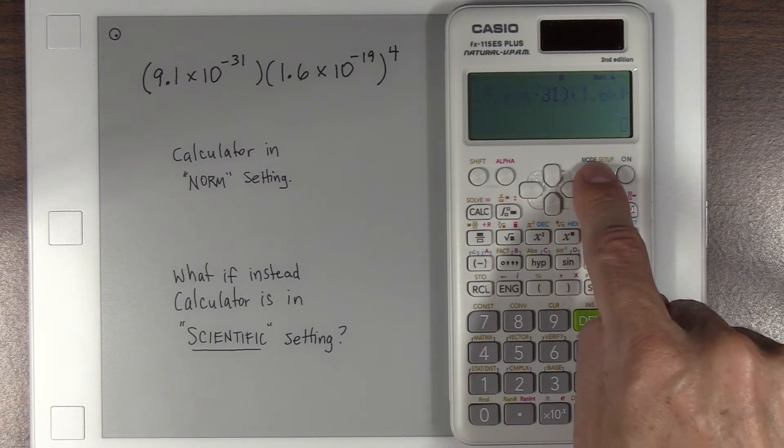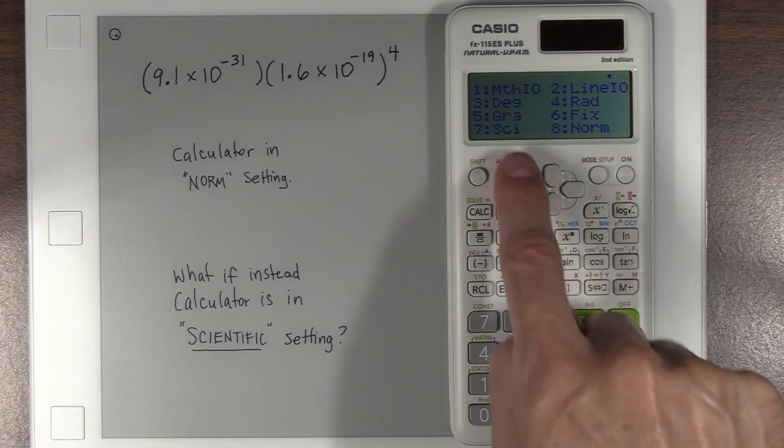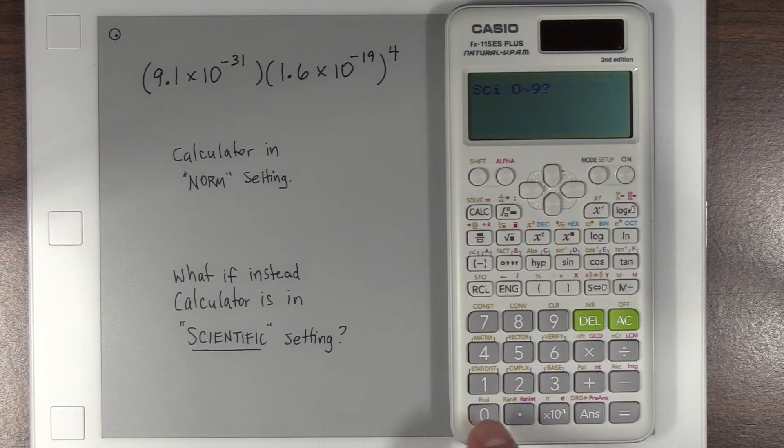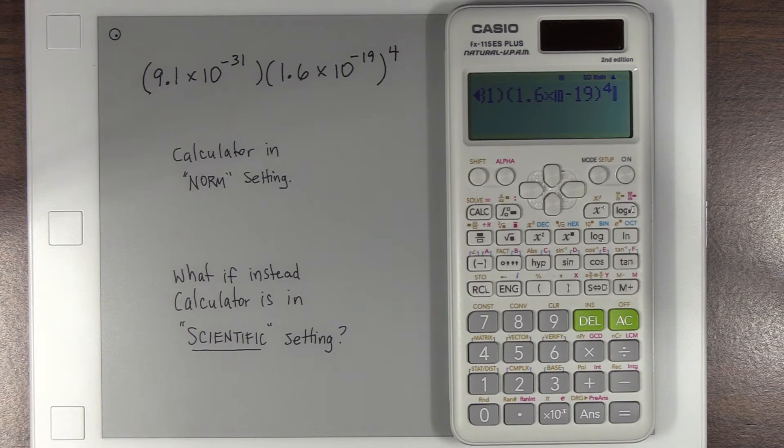And I thought, okay, well wait, maybe I need to put it in scientific notation mode. Maybe it handles, maybe it gets more clever and has a different algorithm for solving these sorts of problems. But it turns out, sadly, it doesn't. You get the exact same result of zero.